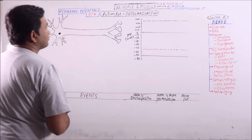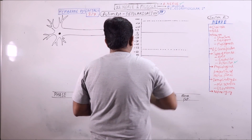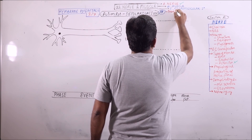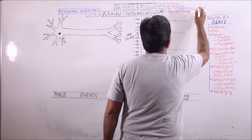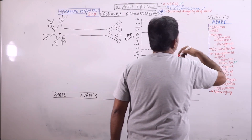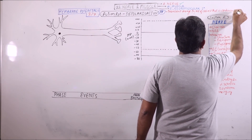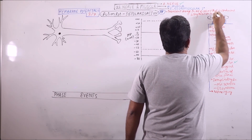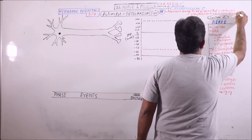What is action potential? It is a transient change in membrane potential of about 105 mV that is conducted along the axon in an all-or-none manner.